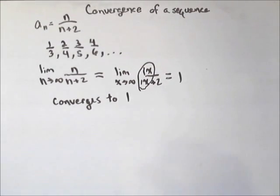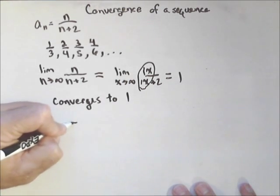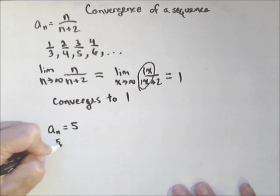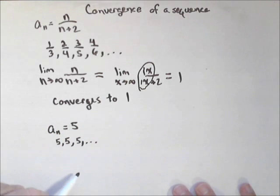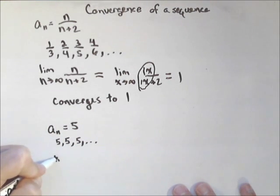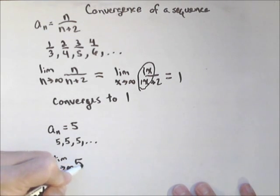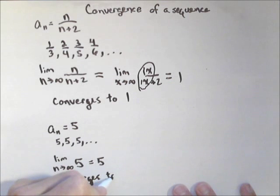Let's look at another, we're going to look at one more example. And that is if we had something that was said a sub n equals five. So this sequence is just going to be five repeatedly. So if we wanted to find the limit as n goes to infinity of the number five, well, it's just five.